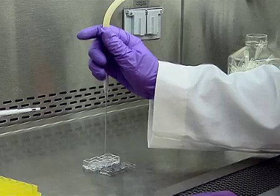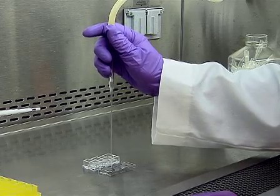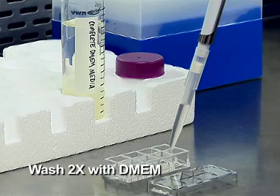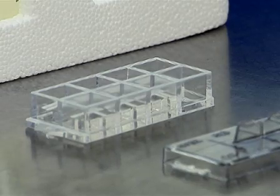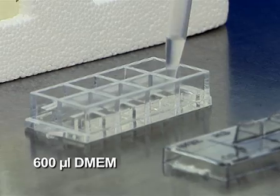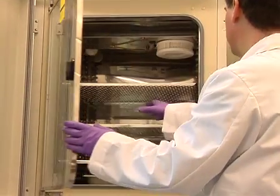Next, carefully remove the transfection complex media from each sample by vacuum suction. Wash cells twice with 600 microliters of complete DMEM, then replace the media in each well with 600 microliters of complete DMEM. Return the samples to the incubator.